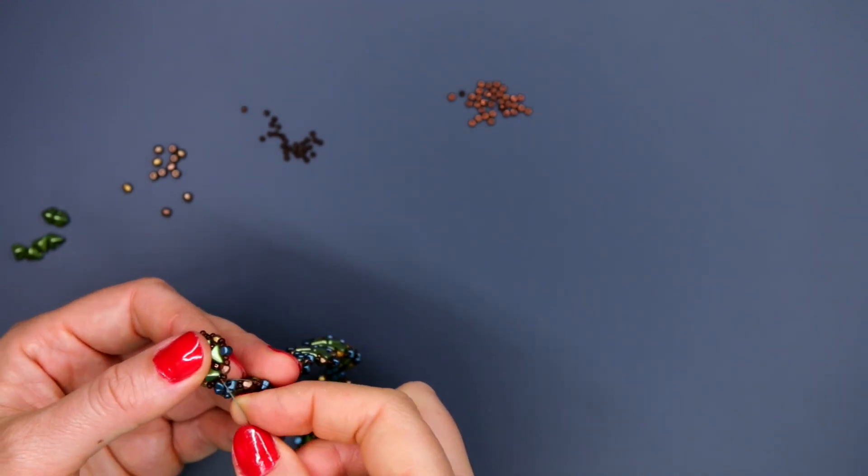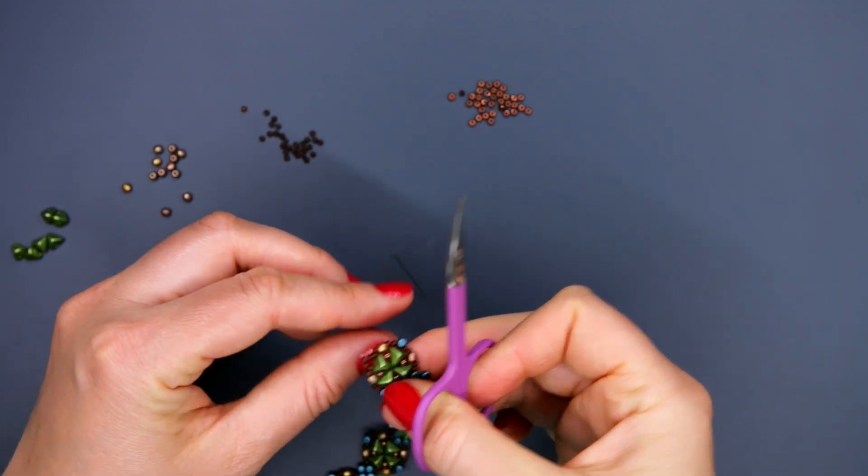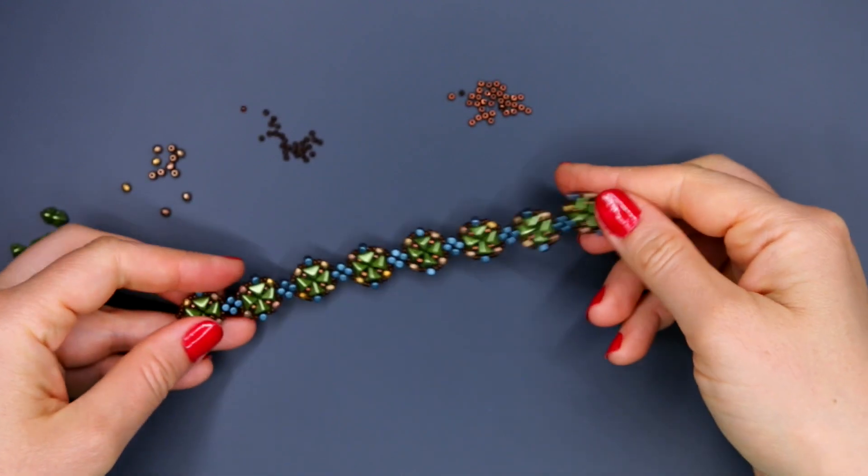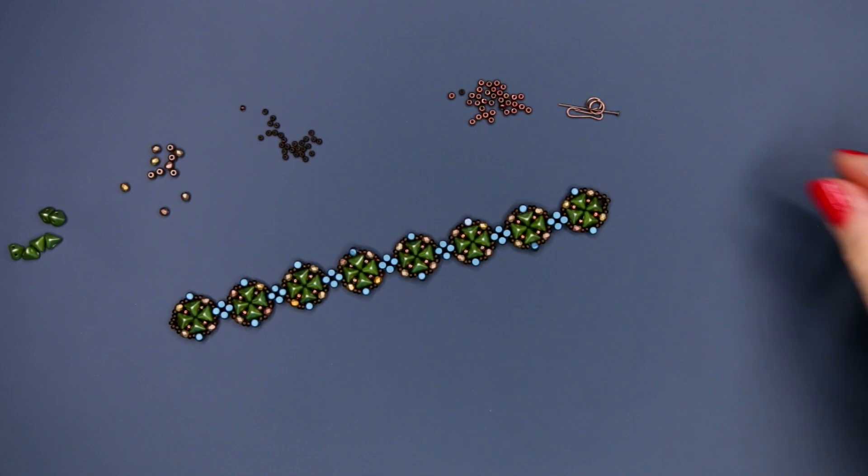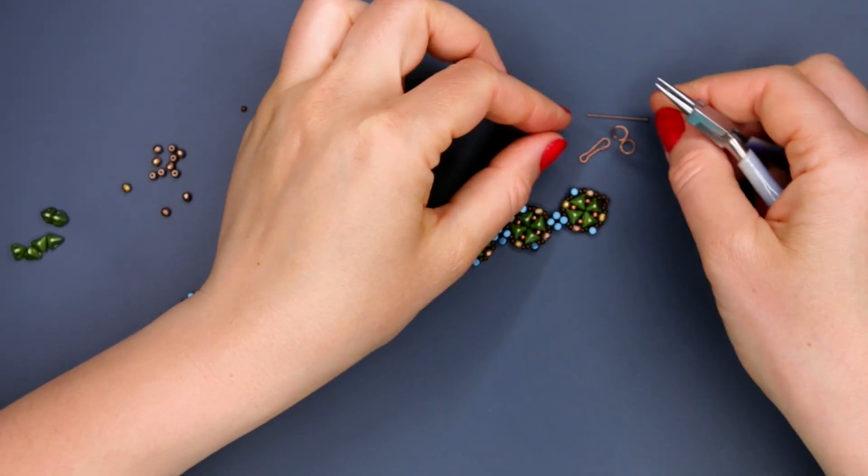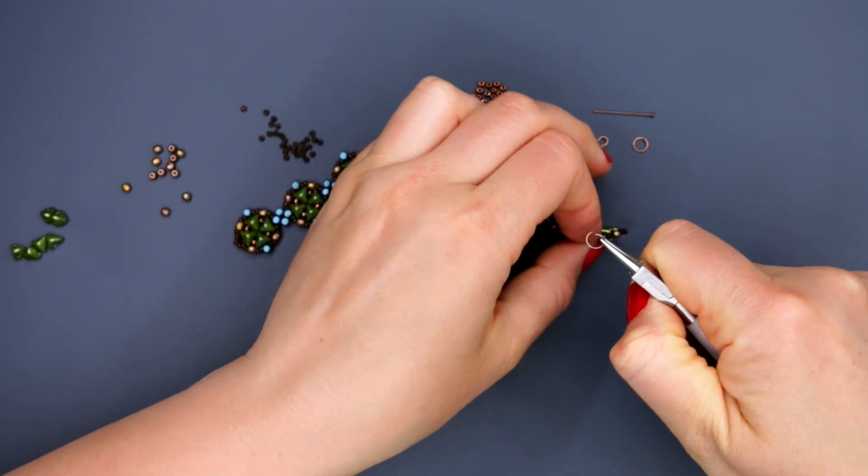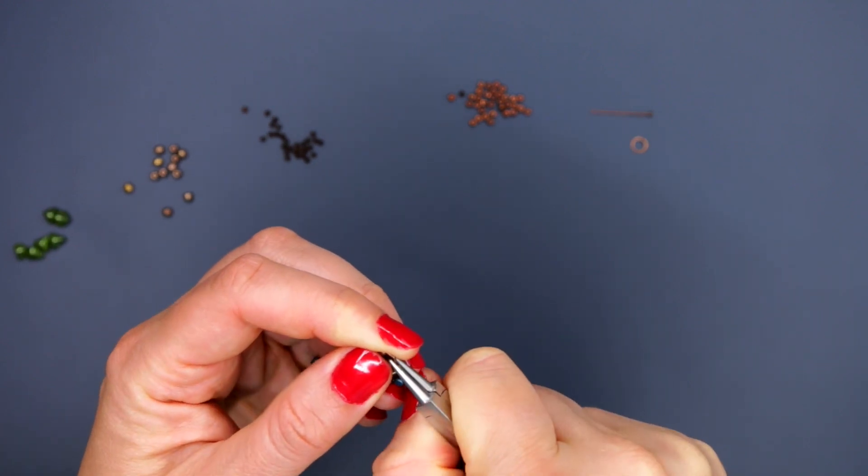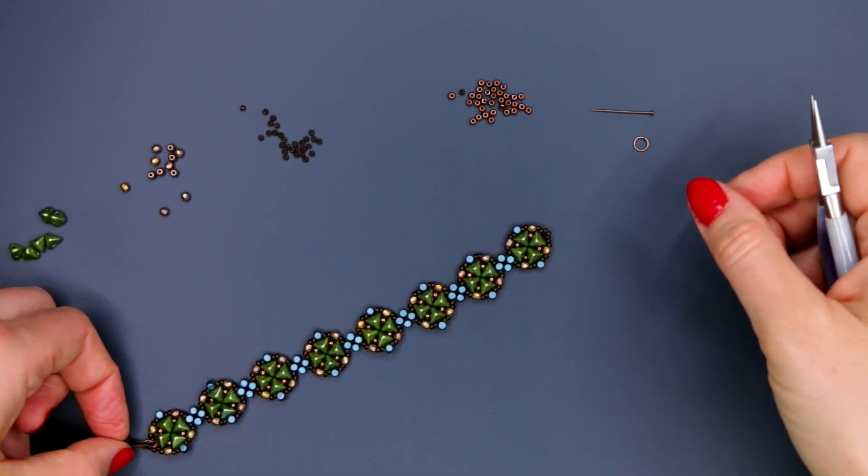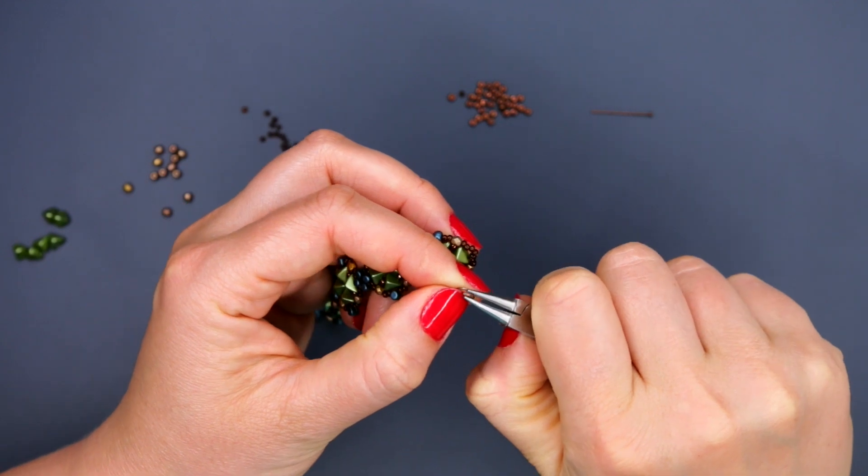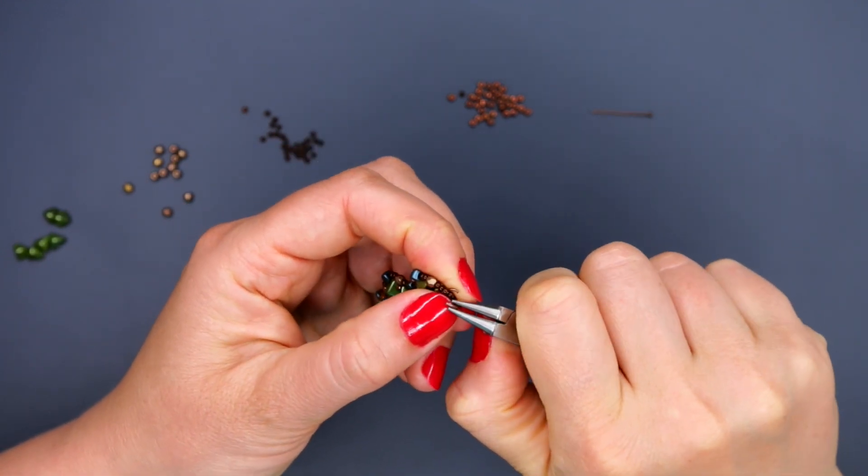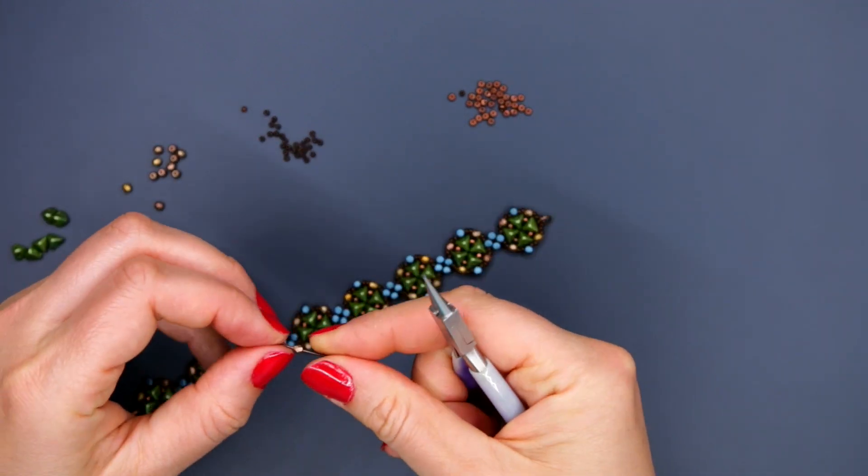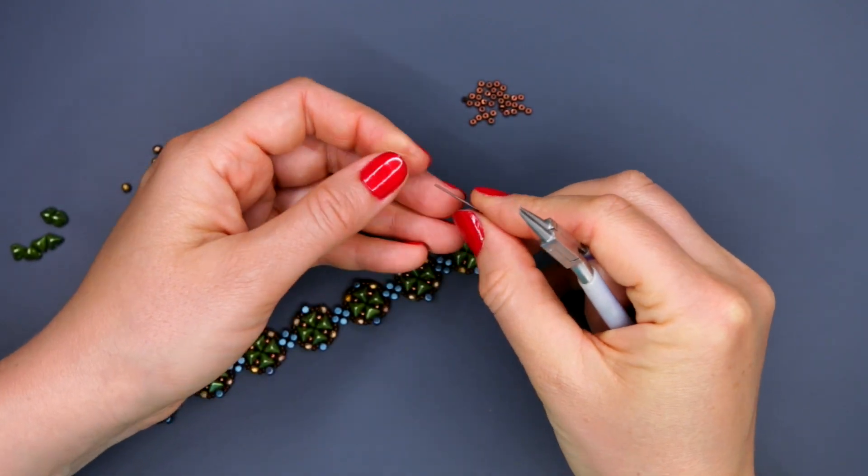We have completed our weaving. Fix the thread with couple of knots. Hide them between seed beads. Cut off the thread in a taut state. At one end of the bracelet fix jump ring with clasp. At another end of the bracelet fix ring and add a small pendant, head pin with faceted bead and seed bead.